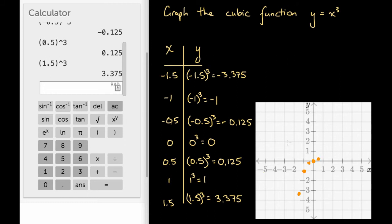Then we've got 1 and 1. It's going to be 1 unit right of the origin and 1 unit up. And then we're going to have 1.5 and about 3.4. That's 1.5 units right of the origin and about 3.4 units up.